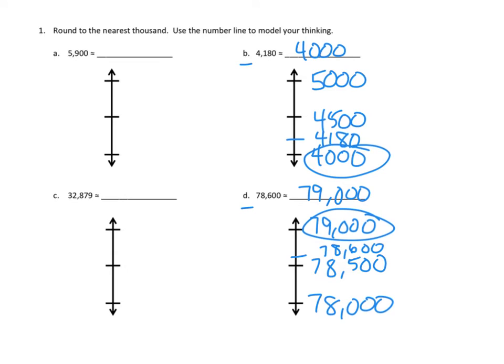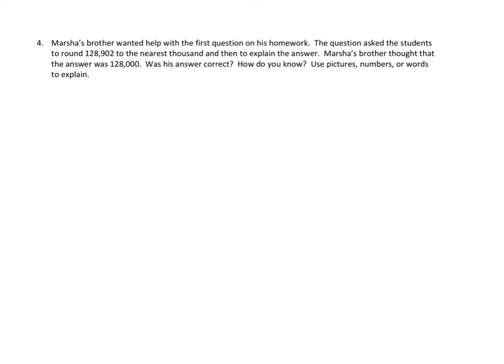Let's take a look at one more problem from tonight's homework. This one's a story problem. We always use our read, draw, and write strategy with story problems. Let's take a look at what we can do on our first read. Marshall's brother wanted to help with the first question on his homework. The question asked the students to round 128,902 to the nearest thousand and then explain the answer. Marshall's brother thought that the answer was 128,000. Was his answer correct? How do you know? Use pictures, numbers, or words to explain.